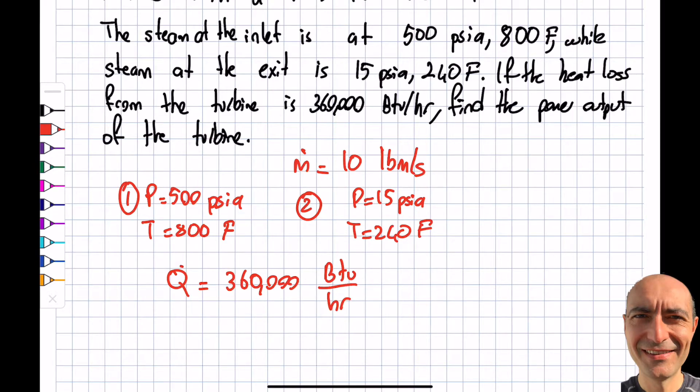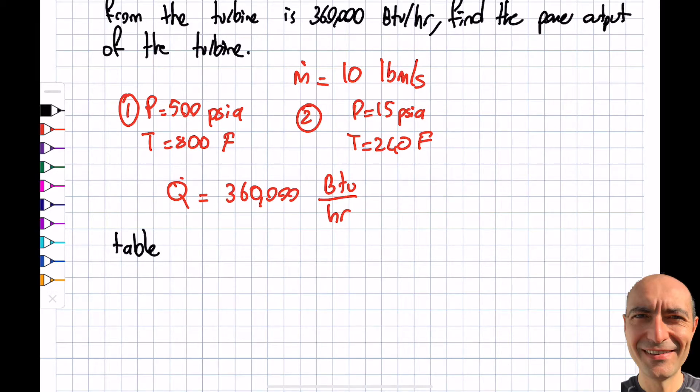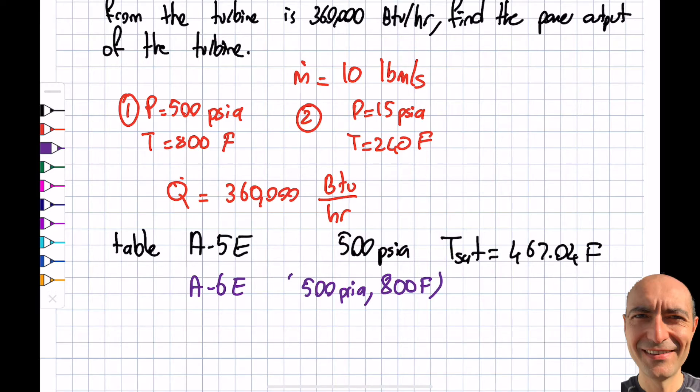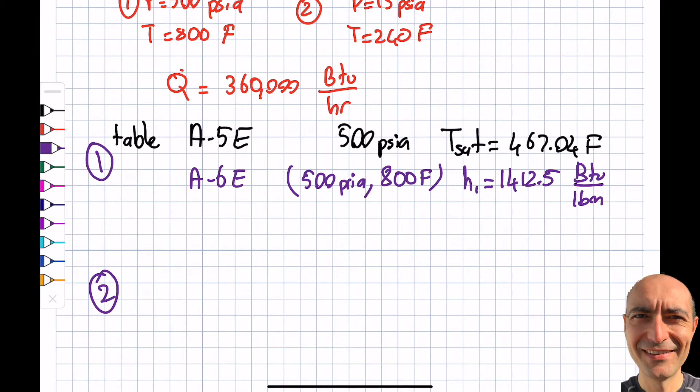It's asking me what is the power output of this particular turbine. How much energy can I extract from this fluid, the steam that I have? I go to Table A-5E at the back of the Cengel Appendix 2, and I look at 500 psia and find my saturated temperature corresponding to this particular saturated pressure is 467.04°F. The information given to me is 800°F, so no question about it, it's definitely superheated vapor.